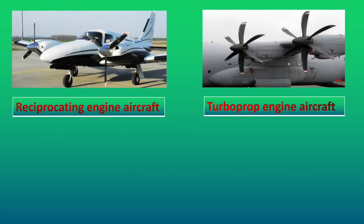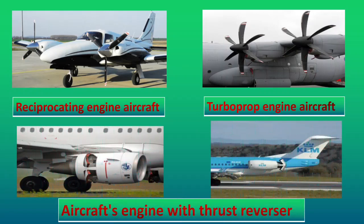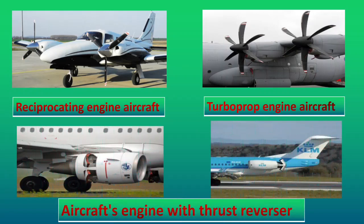As you can see in these pictures, an aircraft powered by a reciprocating engine and an aircraft powered by turboprop engines have propellers with reverse pitch capabilities that can be used to slow the aircraft during landing. In the next picture, you can see aircraft powered by turbofan engines. These aircraft do not have reversing propellers, but they do have provisions for reversing some of their thrust by using thrust reversal.